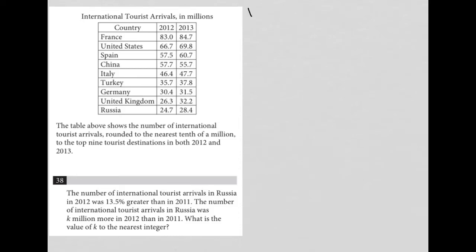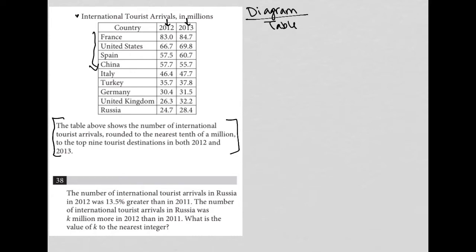This question is a diagram-based question. We have a table provided here about international tourist arrivals in millions. We have a list of countries with the number of tourists arriving in 2012 and 2013. We've already seen this information from question 37, so I'm going to jump straight into question 38.